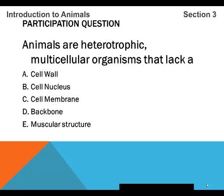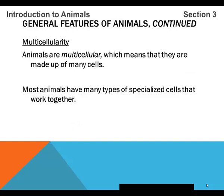If you are unsure of the answer, now would be the time to go back to the previous slide and review it. Multicellularity: animals are multicellular, which means they are made up of many cells. Most animals have many types of specialized cells that work together — for example, your body has nerve cells that communicate with muscle cells. Animal cells do not have cell walls.